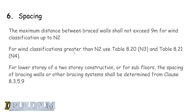The other rule that's going to affect us is spacing. The maximum distance between braced walls shall not exceed 9 metres for wind classifications up to N2. For wind classifications greater than N2, we use table 8.20 for N3 classifications or table 8.21 for N4 classifications. For a lower storey of two-storey construction or other systems, we use clause 8.3.5.9.